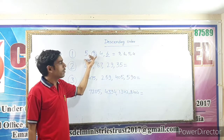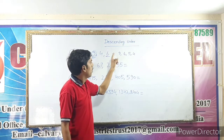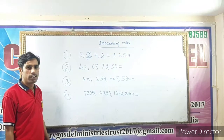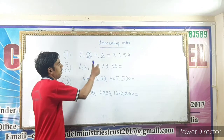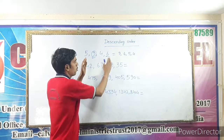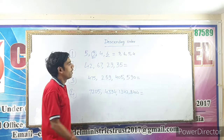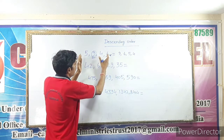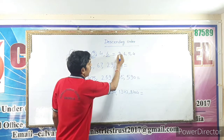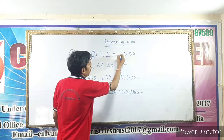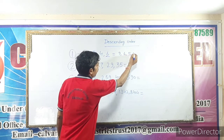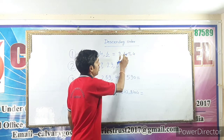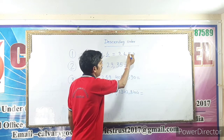So, the descending order of these 1-digit numbers is: 9, 6, 5, 4. Do you understand? We have 4 numbers, and in descending order: 9, 6, 5, 4.